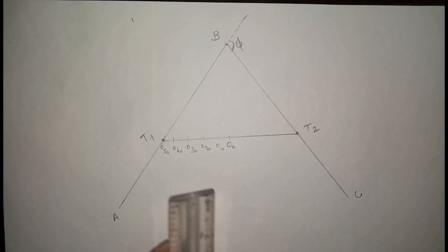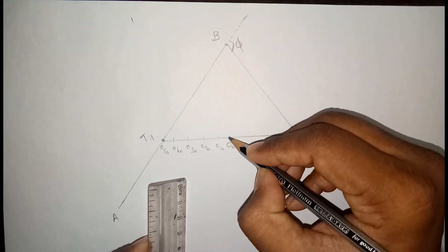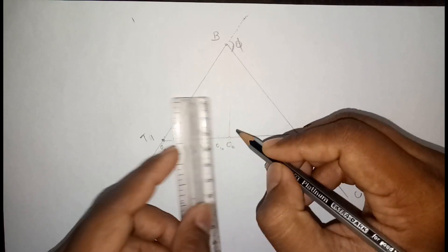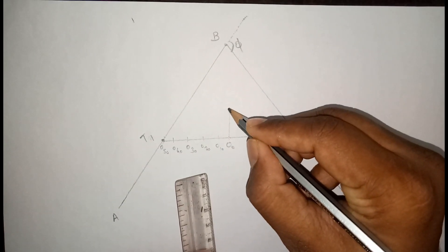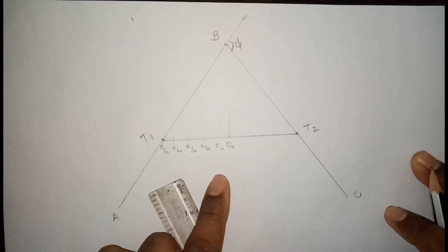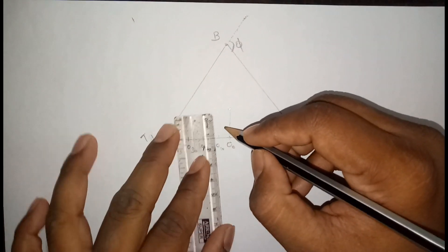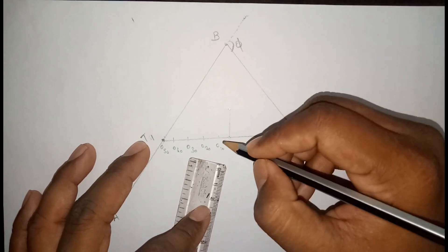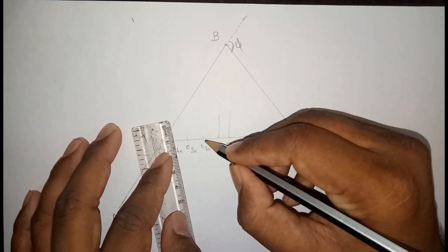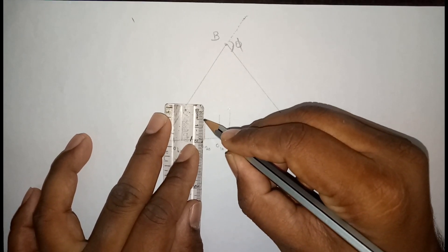With the help of a cross staff, fix the ranging rod at T1. Using the open cross staff, mark the mid-ordinate distance as per calculations — this gives your first point on the curve. Then ordinates are calculated at regular intervals. At 10 meters, calculate the next ordinate and mark the perpendicular distance with the cross staff. Select another point and mark the distances as per the calculations.